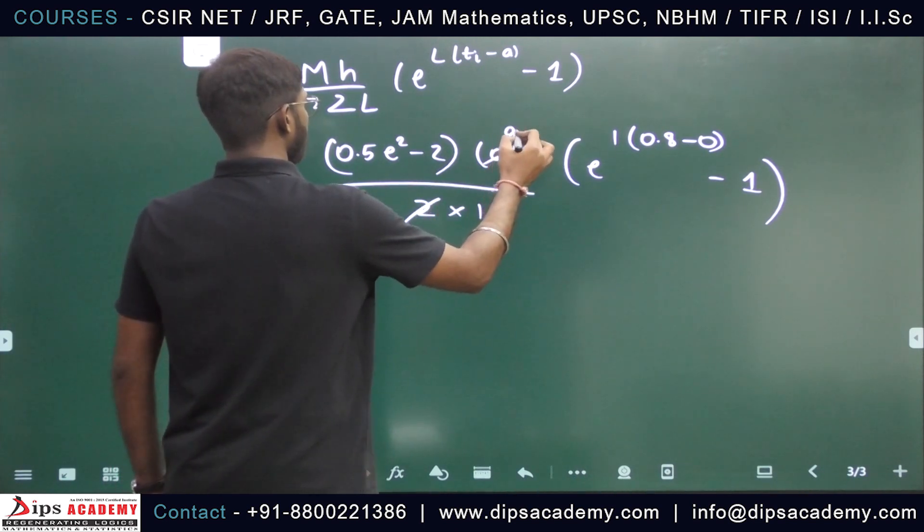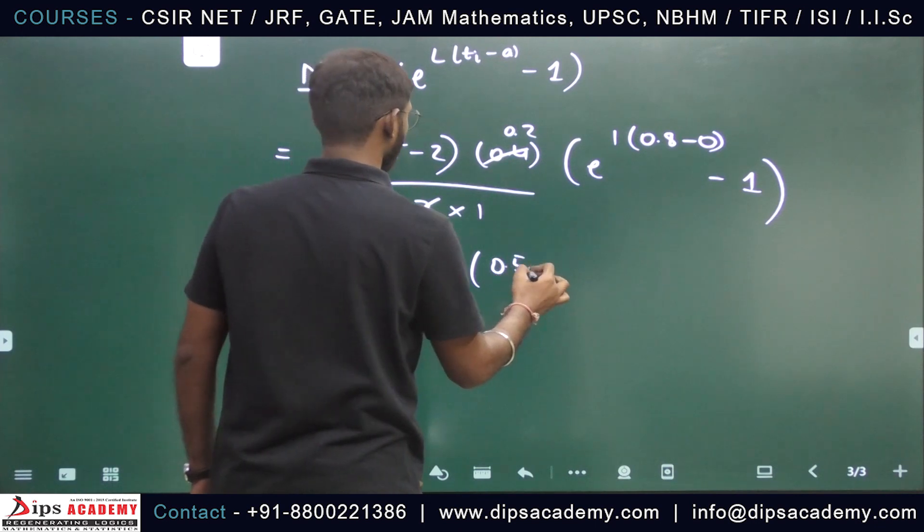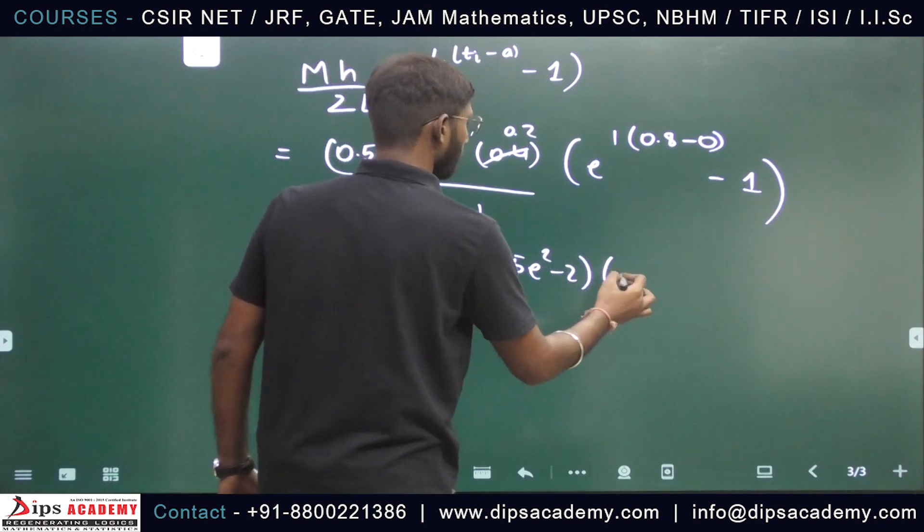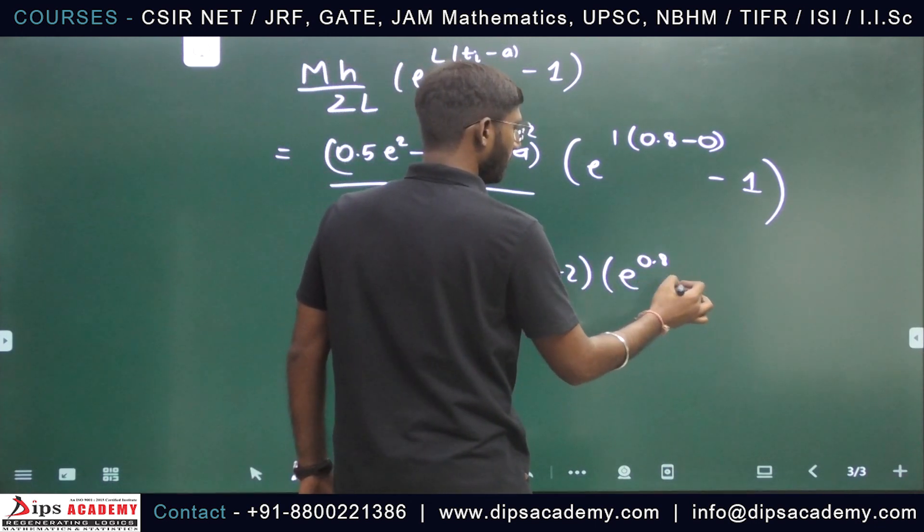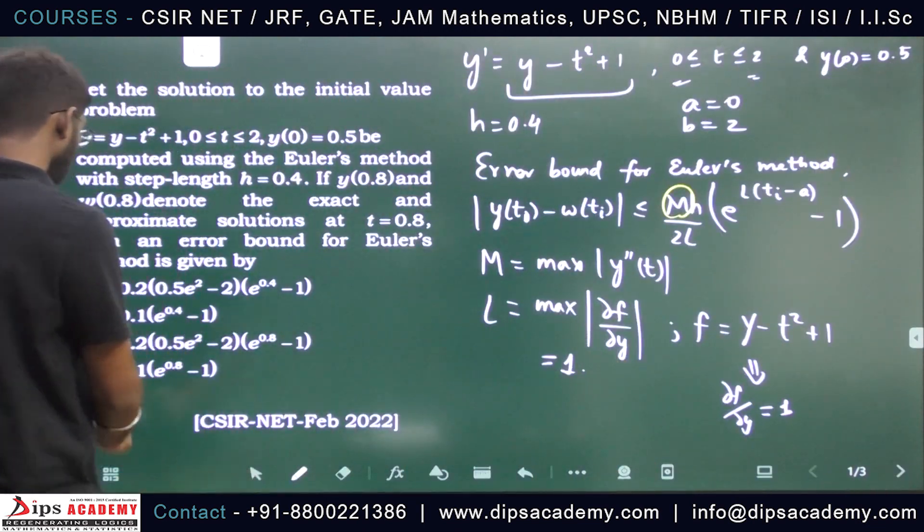Cancel out, we get 0.2. So 0.2 times 0.5*(e squared minus 2) times (e^0.8 - 1), which is nothing but option number C.